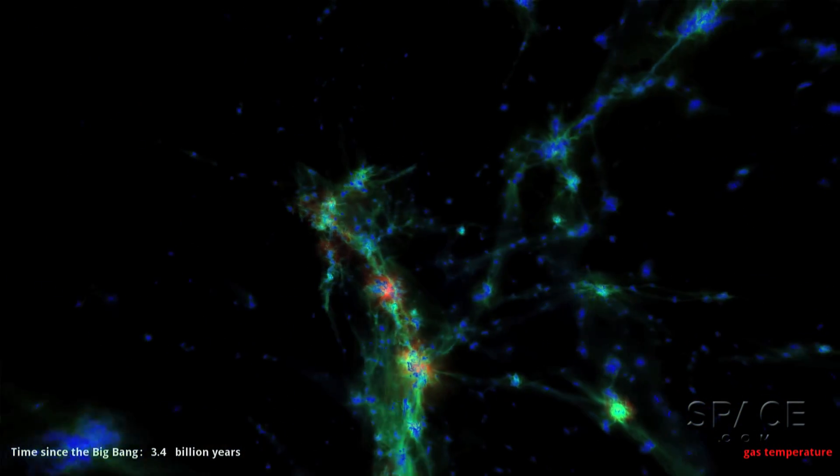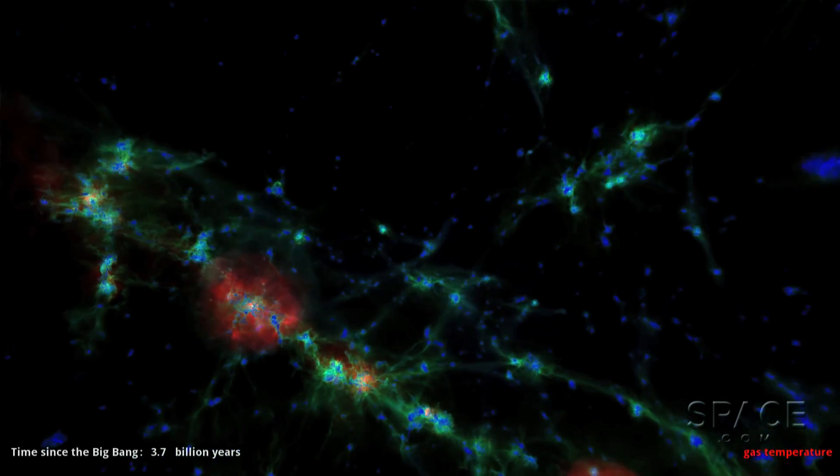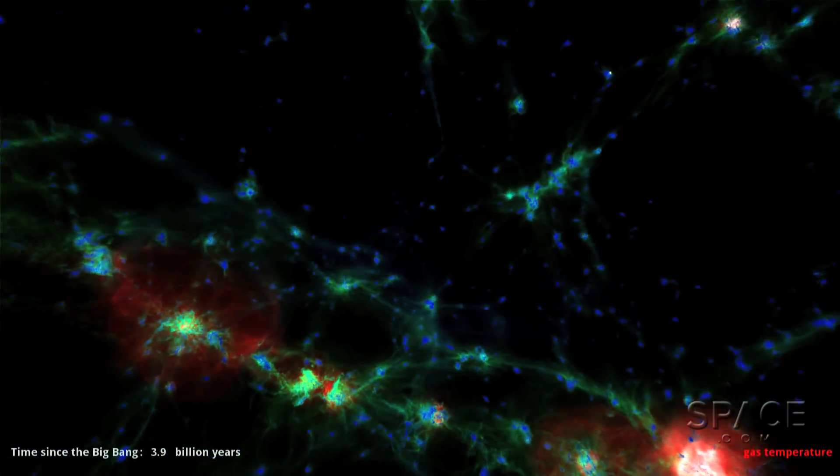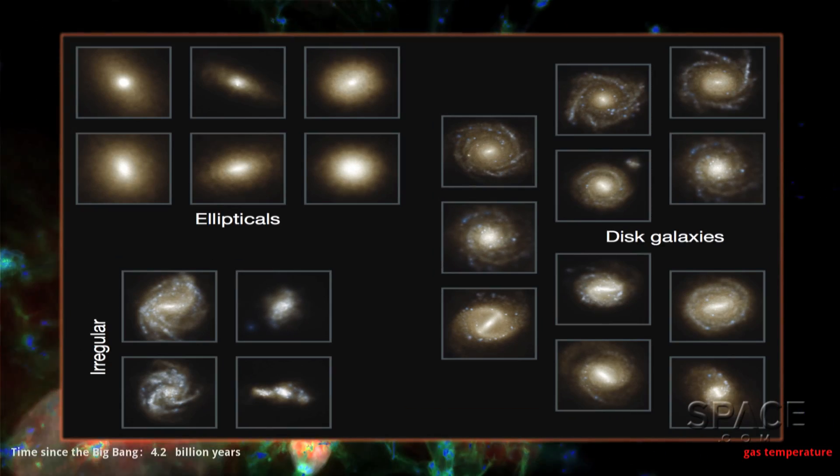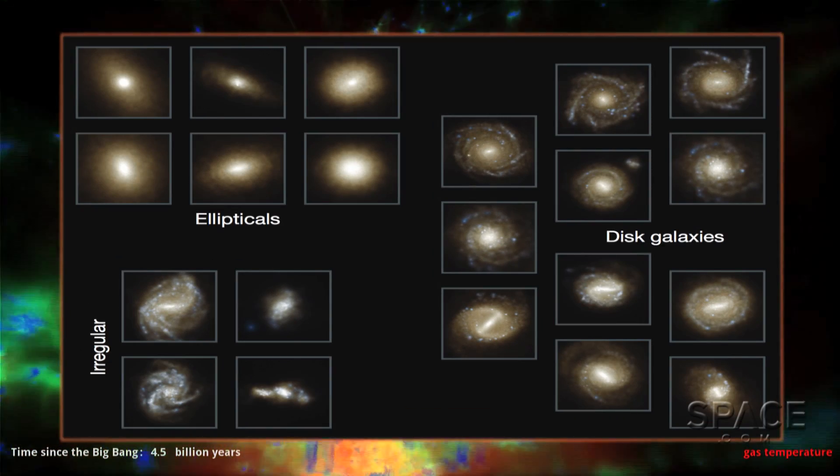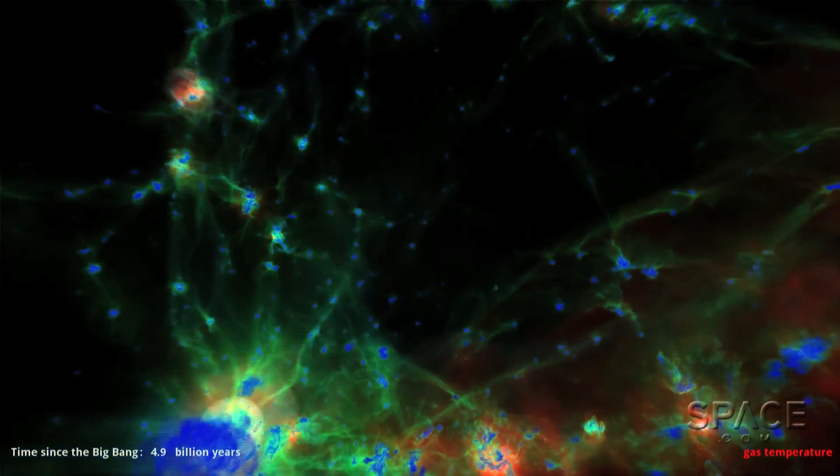But what we're watching here is a new simulation that for the first time accurately models not only the web-like structure of galaxy interactions, but also conjures up the correct mix of spiral, elliptical, and irregular galaxies. And it shows how, when, and where every element more complex than hydrogen or helium was created.